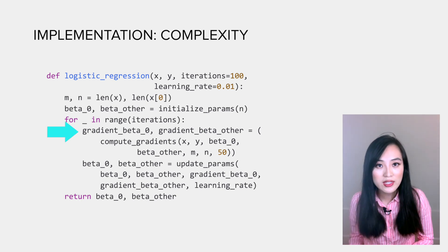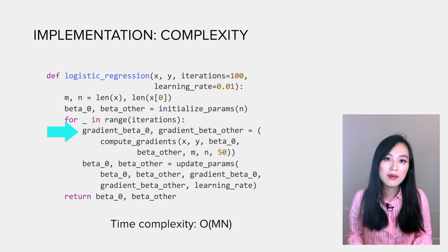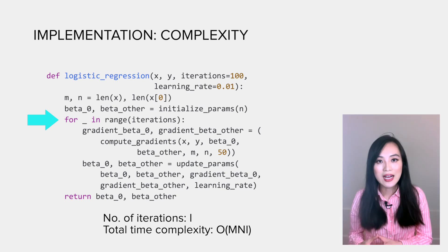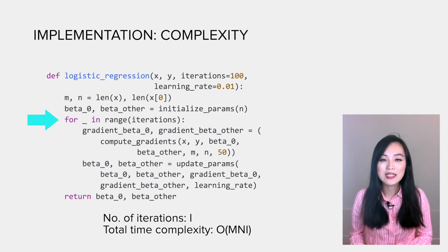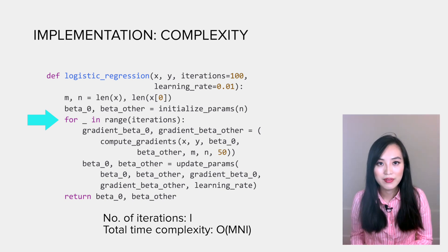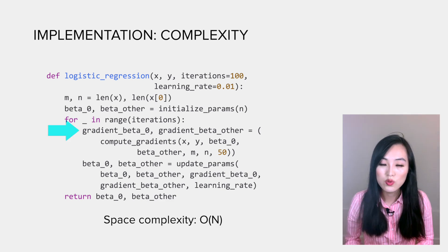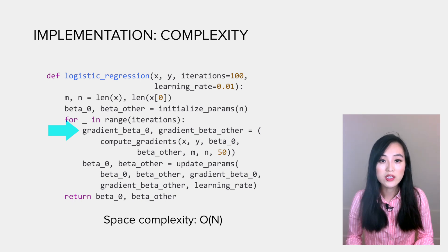If the number of iterations is i, the overall time complexity is O(mni). In terms of space complexity, the only intermediate variable we have created is to store the gradients, so it's O(n). Now we have done the implementation part. You could use it to do a classification task, but there's one potential problem I want to point out.